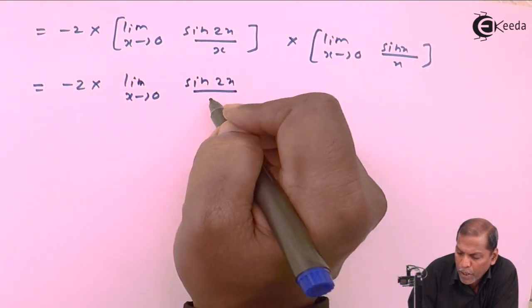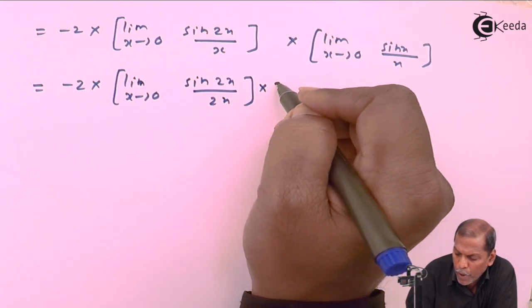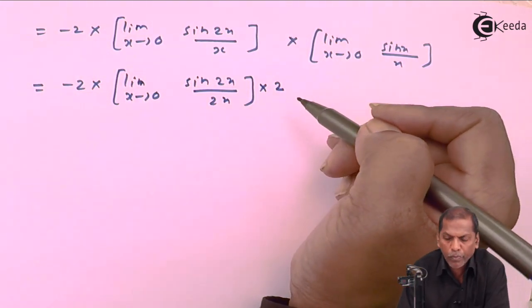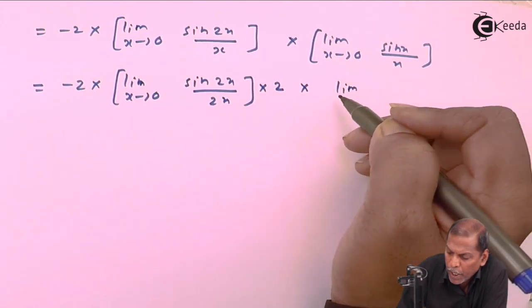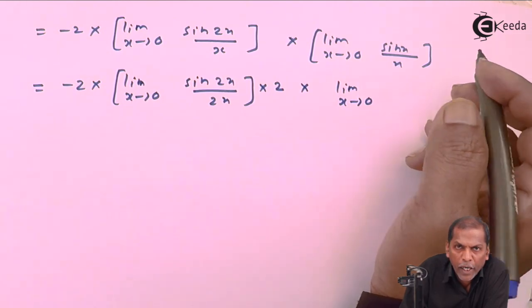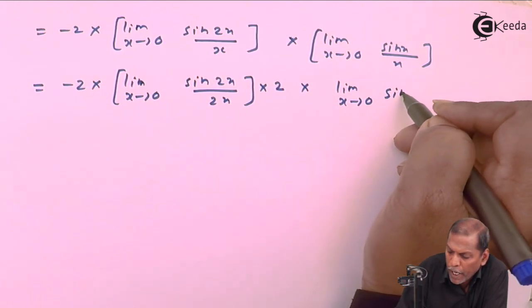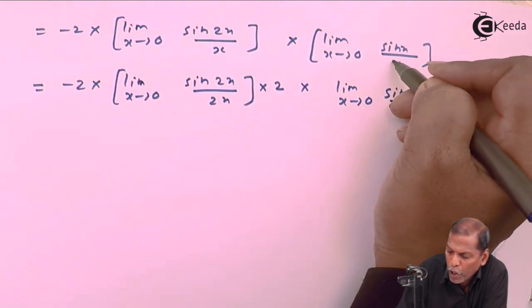First limit we can be arranged as sine of 2x upon 2x, and here we have to multiply by 2 to get the rule. Into second limit we write as it is because it is perfectly connected with rule that limit x tends to 0, sine x upon x.